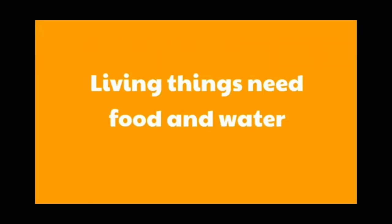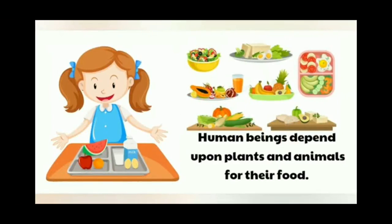Living things need food and water to survive, while non-living things do not need food and water. Human beings depend upon plants and animals for their food — we get rice and other things from plants, and we get milk and eggs from animals. But we need food and water to stay alive.